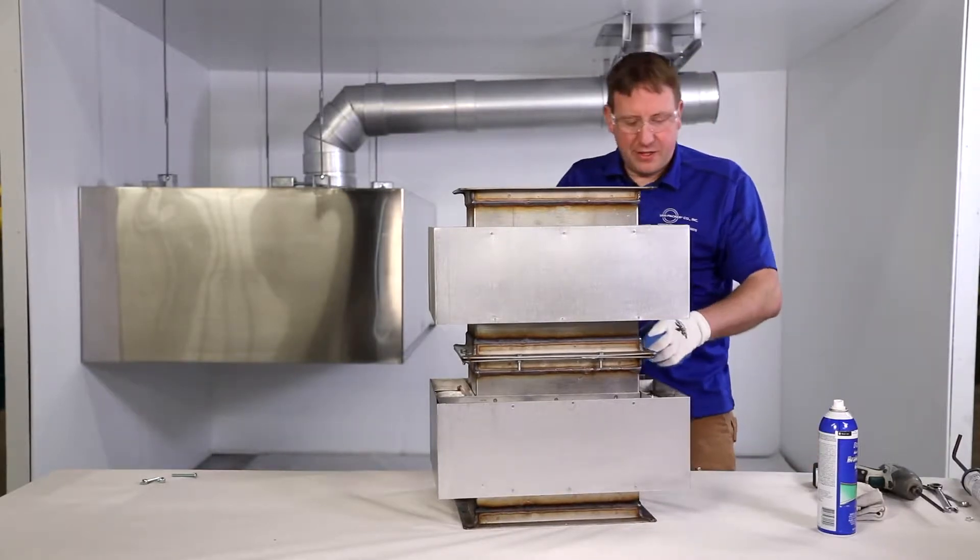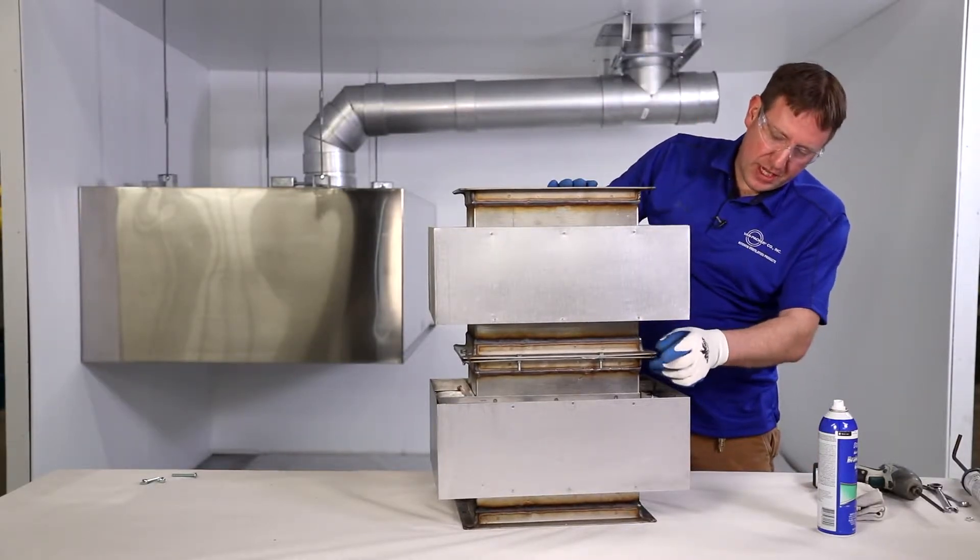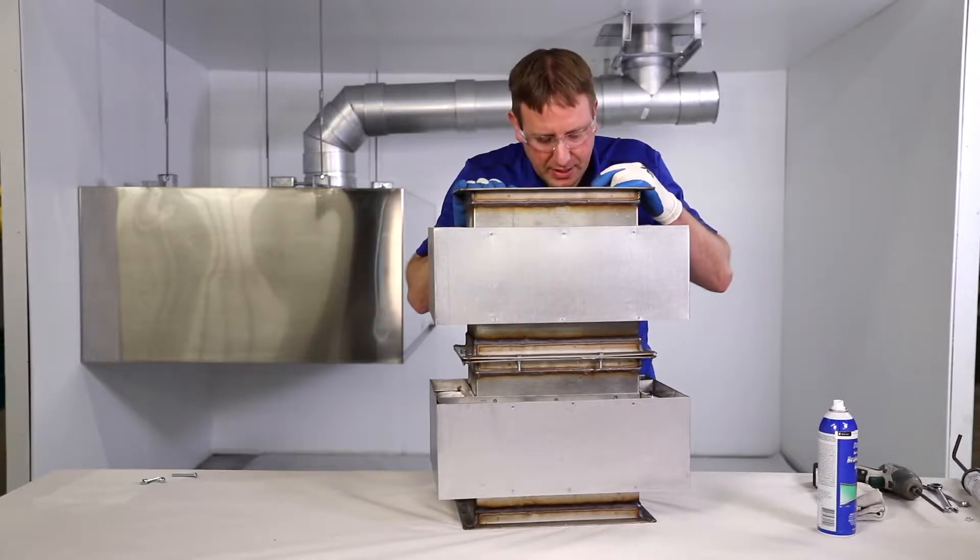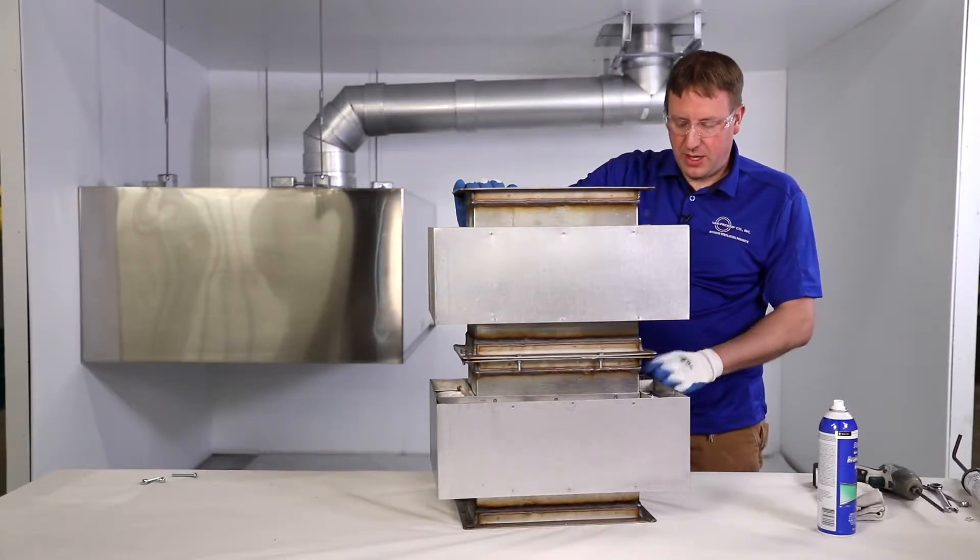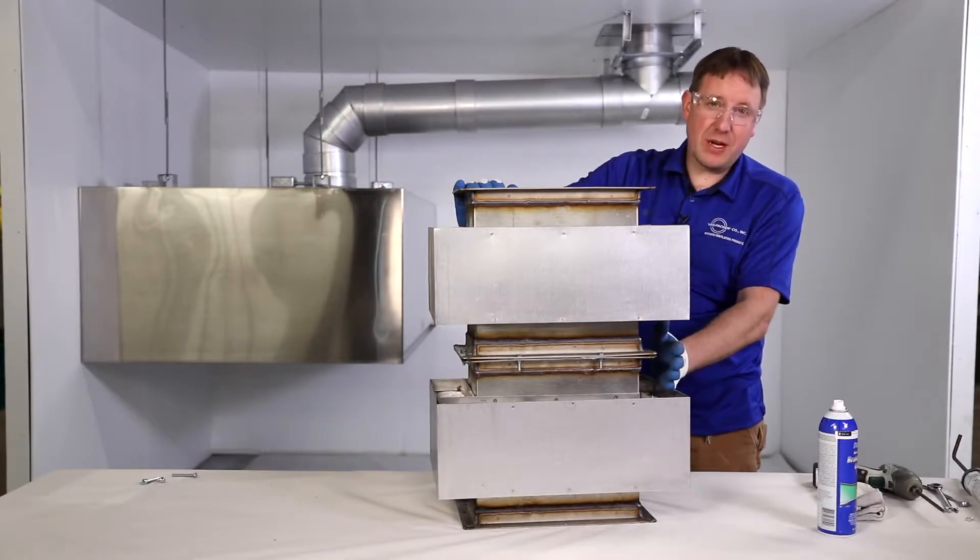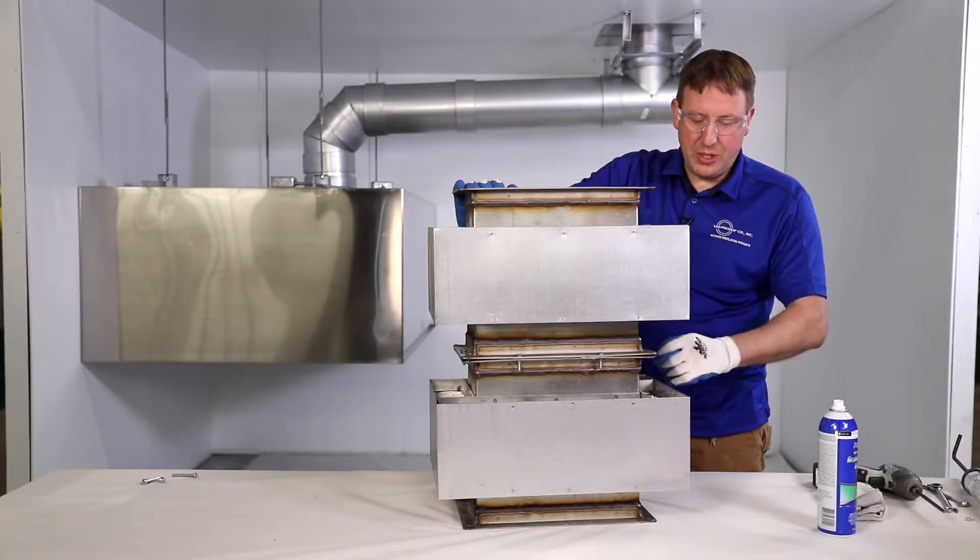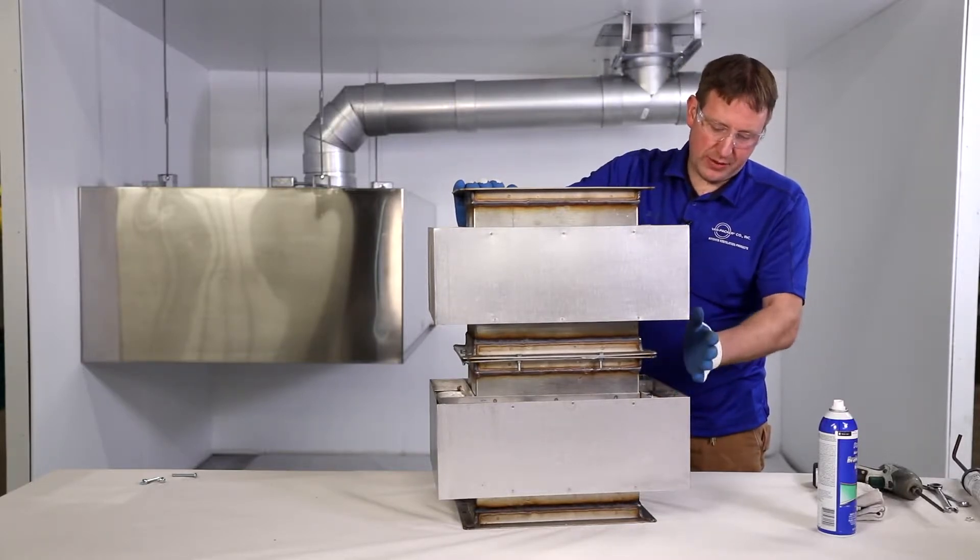Now is the time to wipe off any extra sealant that may have smooshed out on the outside or the inside. Just take a rag and you can wipe it off. Next step is to pack insulation around this joint. You have to have three complete wraps all the way around this joint.